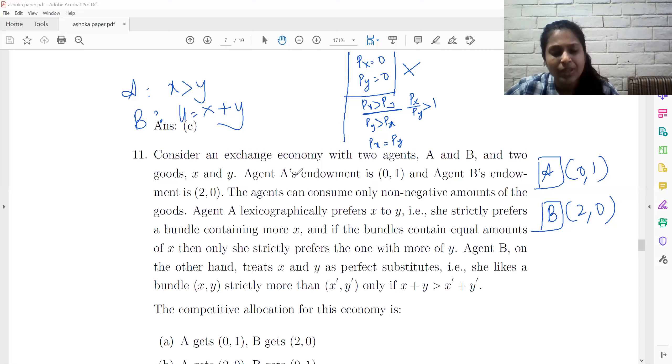If PX by PY is more than 1, then which good will individual B want? Now if PX by PY is more than 1, then good Y is the cheaper good.